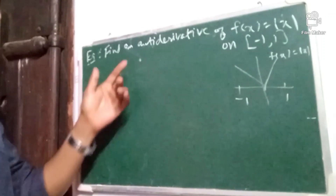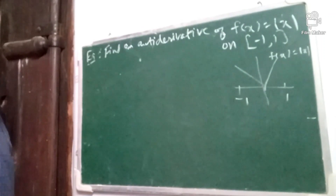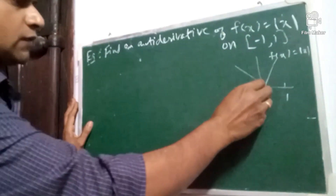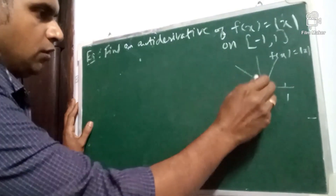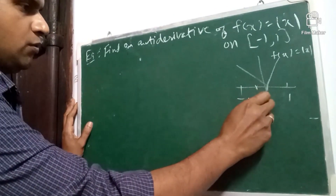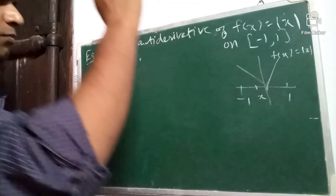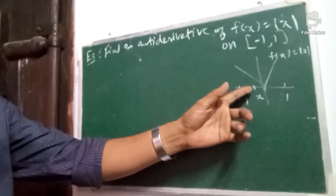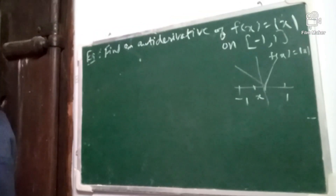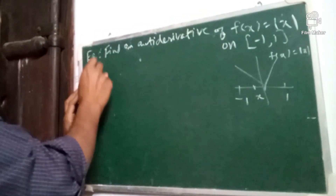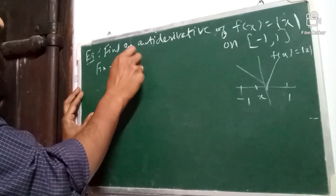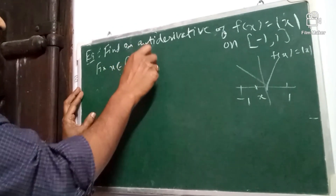To find an antiderivative, we will use the Fundamental Theorem of Calculus. Fix any x in between the interval minus 1 to 1. That x may be here or may be here. So, fix x in minus 1, 1.